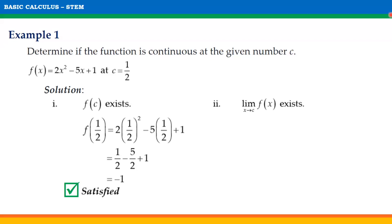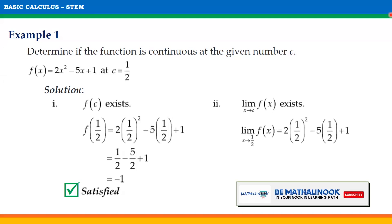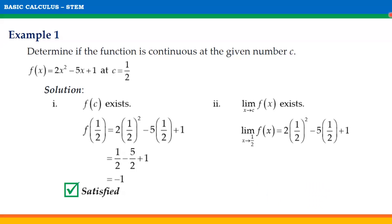For the second condition, the limit of f(x) as x approaches C must exist. Since our given is a polynomial function, we simply use direct substitution to find its limit. The limit of f(x) as x approaches 1/2 equals 2(1/2)² − 5(1/2) + 1, which simplifies to 1/2 − 5/2 + 1 = −1. Since the limit of f(x) is −1, the limit of the function exists.